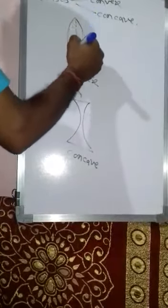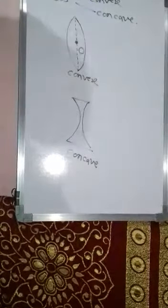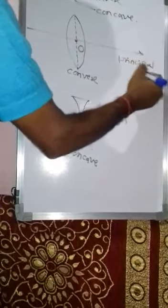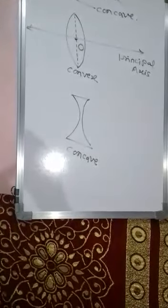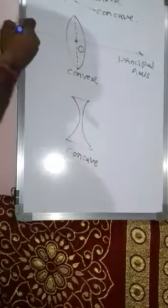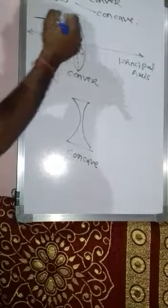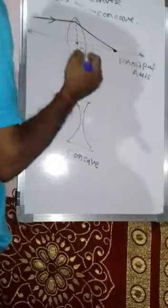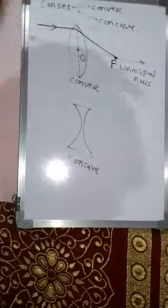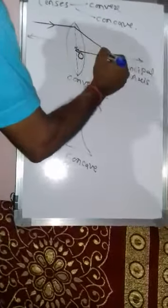For a lens, whether concave or convex, the center point is the optic center. Through that optic center an axis passes, which is called the principal axis. An incident ray that is parallel to the principal axis is refracted and bent toward the principal axis, passing through a point called the focus. The distance of the focus from the optic center is called the focal length.